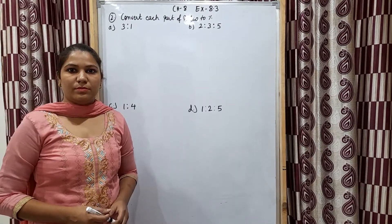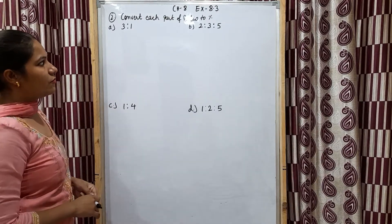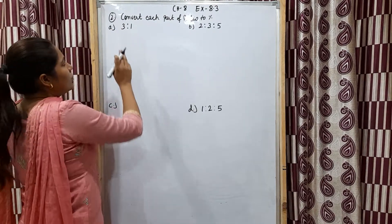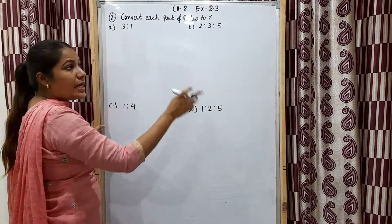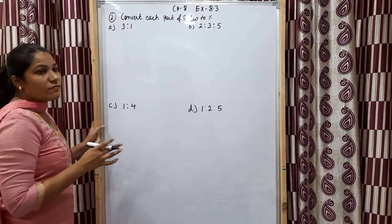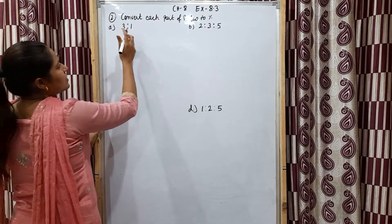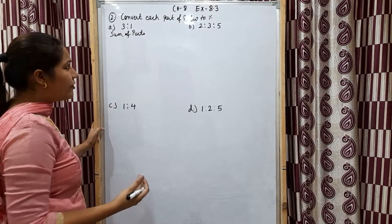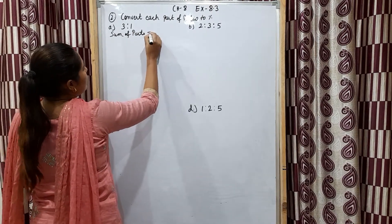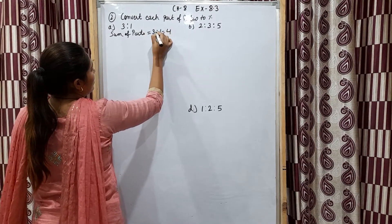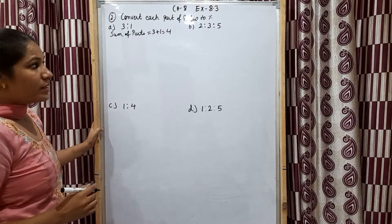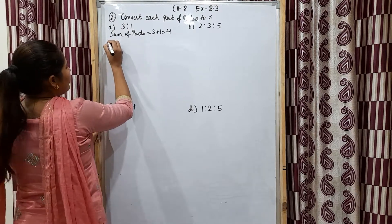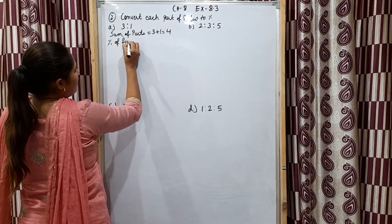Question number 2: convert each part of ratio to percentage. We have ratio 3:1. We have to convert each part into percentage. First we will add them — that is the sum of parts: 3 plus 1 equals 4. Then percentage of the first part: first term is 3, total is 4. So 3 upon 4 multiplied by 100. We cancel on the table of 4: 4 fives are 20, so 3 into 25 gives 75 percent.